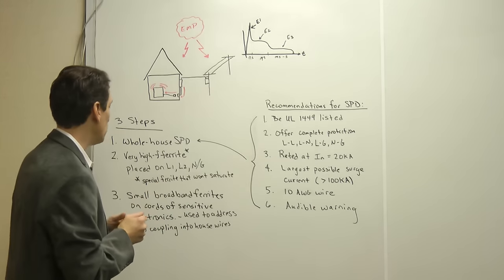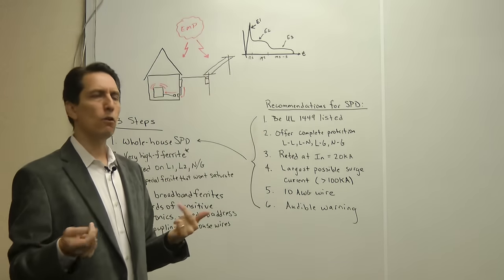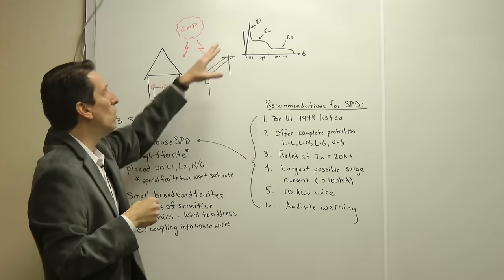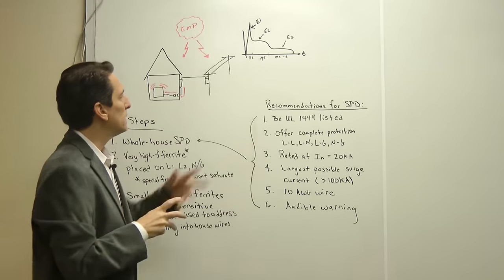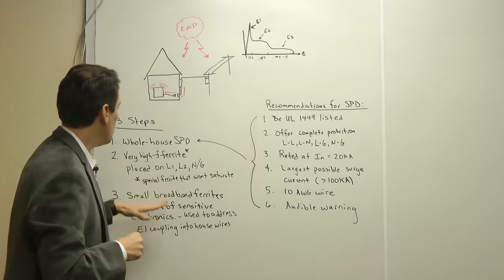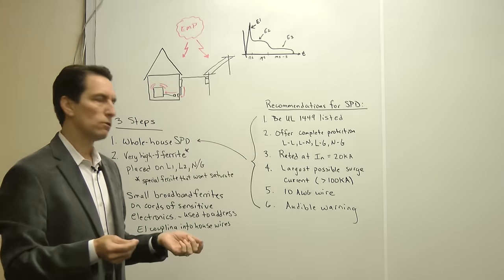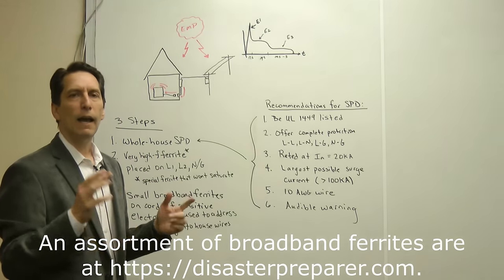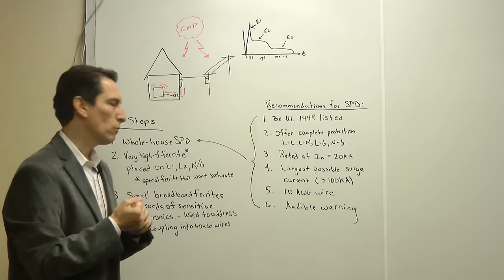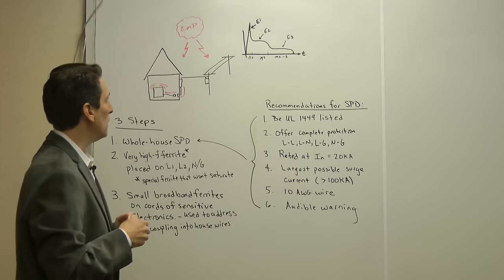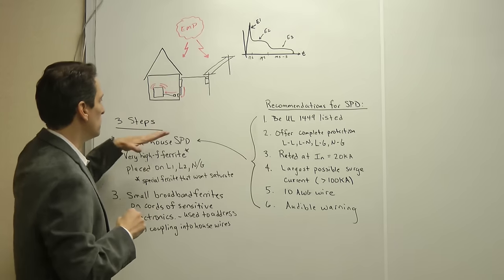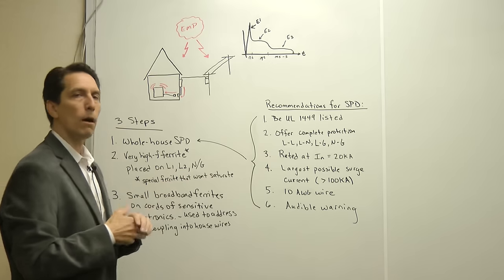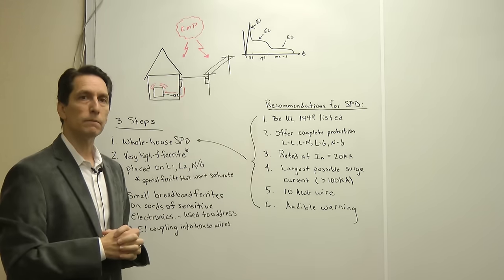If you have sensitive electronics in your home — like computers or radios — and you're worried about E1 energy coupling into the house wires and propagating into those devices, you'd want to put small broadband ferrites on the cords to those sensitive electronics. These are easy to find. The main thing is to find them with the right diameter to clip around your power cords. This addresses E1 coupling into the house wires and flowing up into those devices.